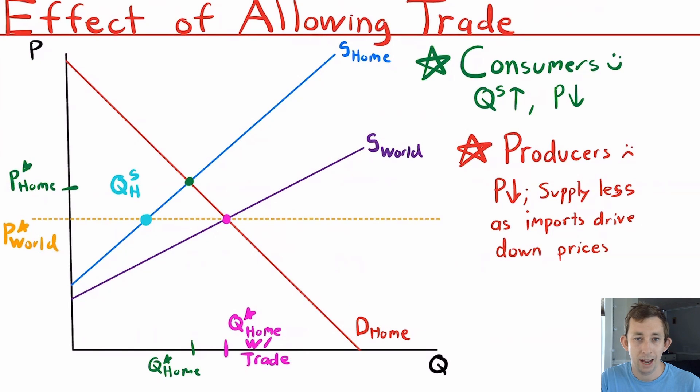So what's going to happen? Currently, before we allow trade, we're right here at this green dot. This is just our donut sellers in the town and the consumers in our town.